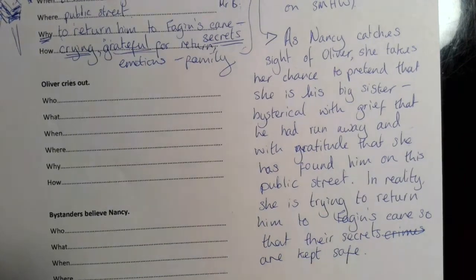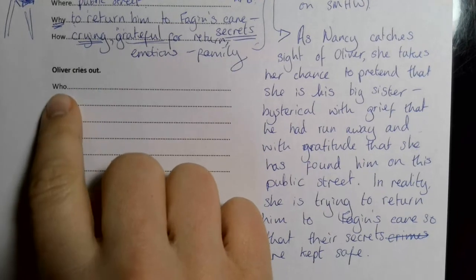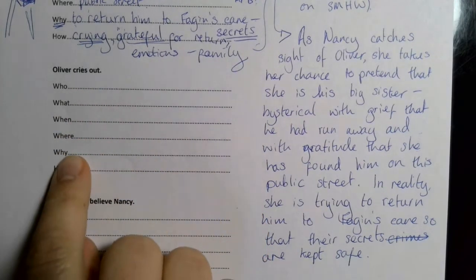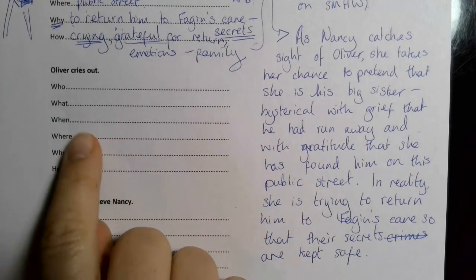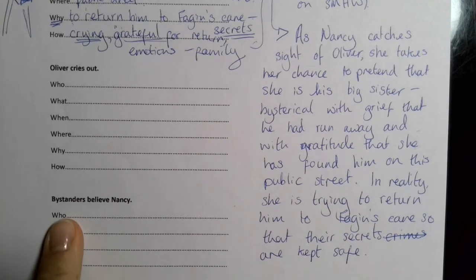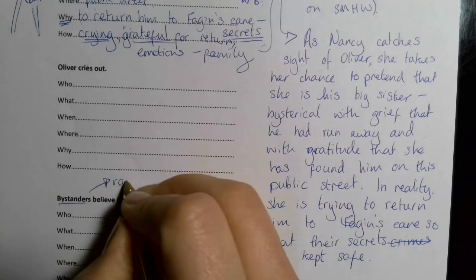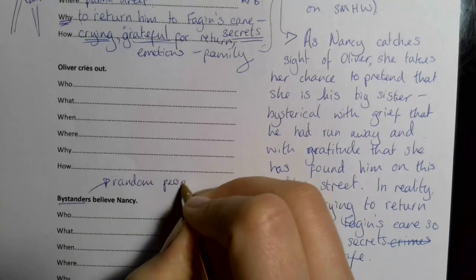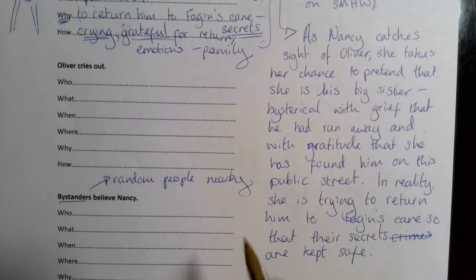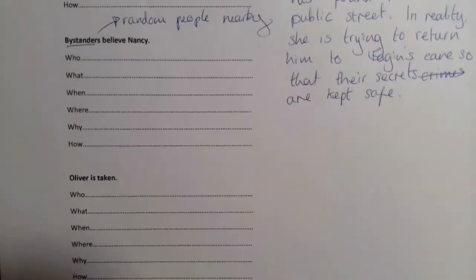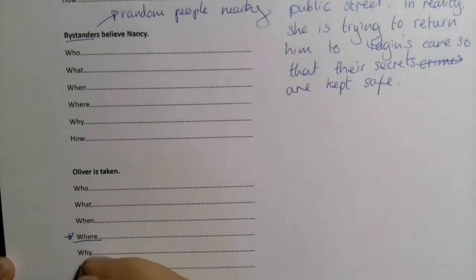There are actually only four sentences to do. The next one is 'Oliver cries out' — the question is really who does he cry out to and probably why. You might find that because you've done such a full first sentence you don't need to be quite so expansive with this one. Then it's 'Bystanders believe Nancy' — bystanders are just the random people who are nearby on the street, like the butcher's boy or the baker. And the final one is 'Oliver is taken' — the key question here is where is he taken and why.